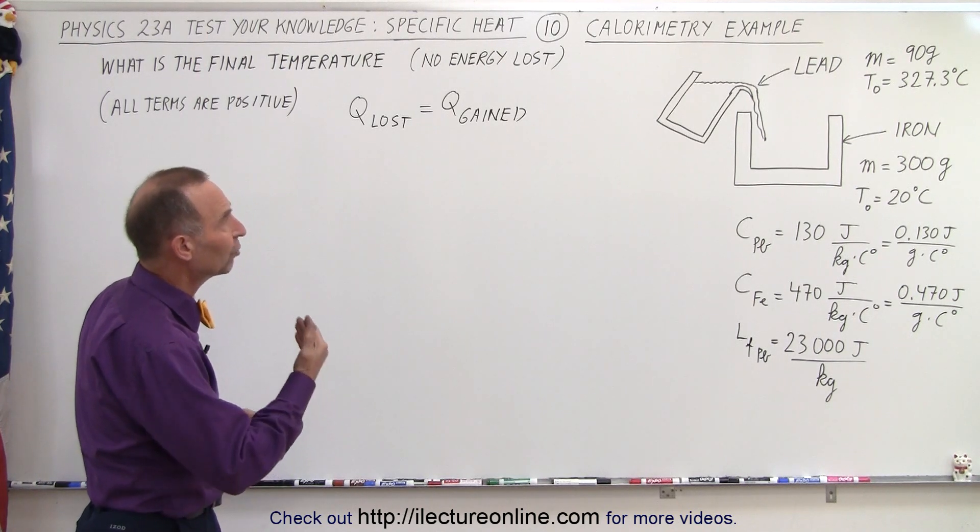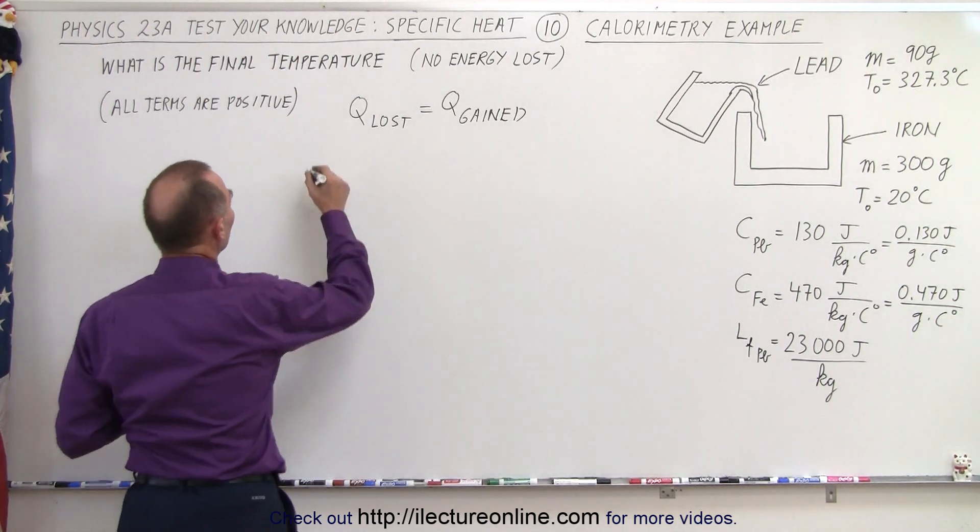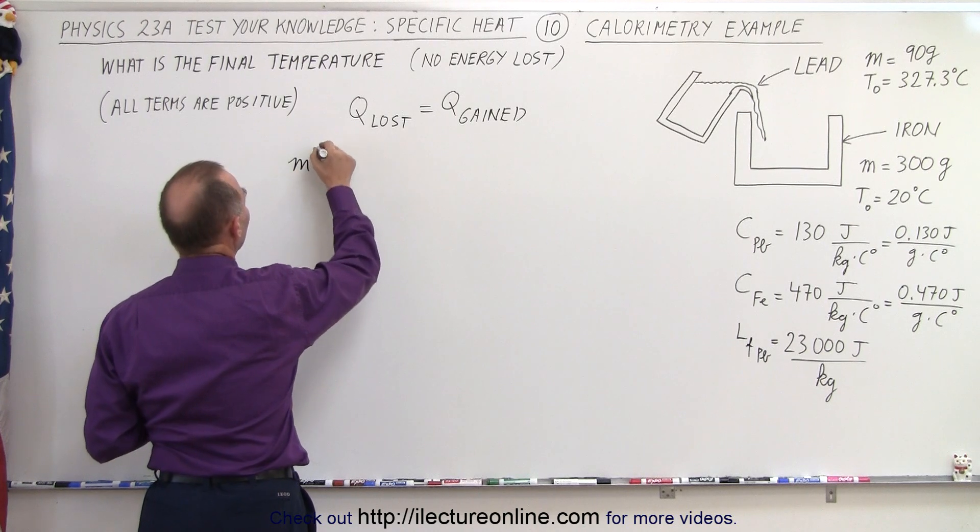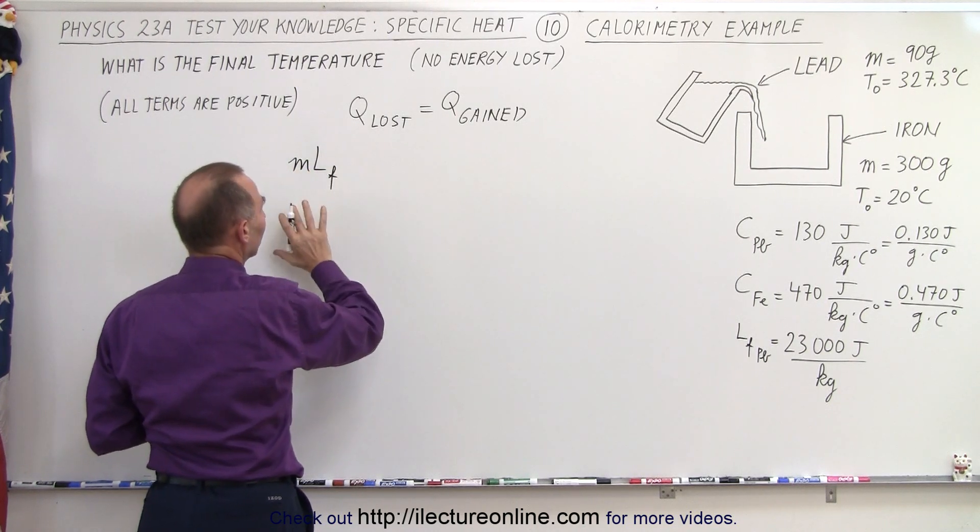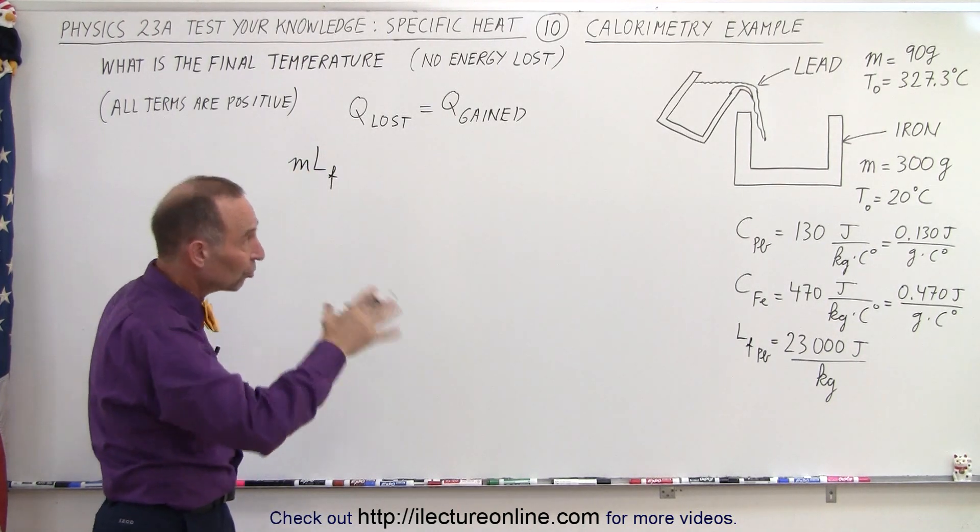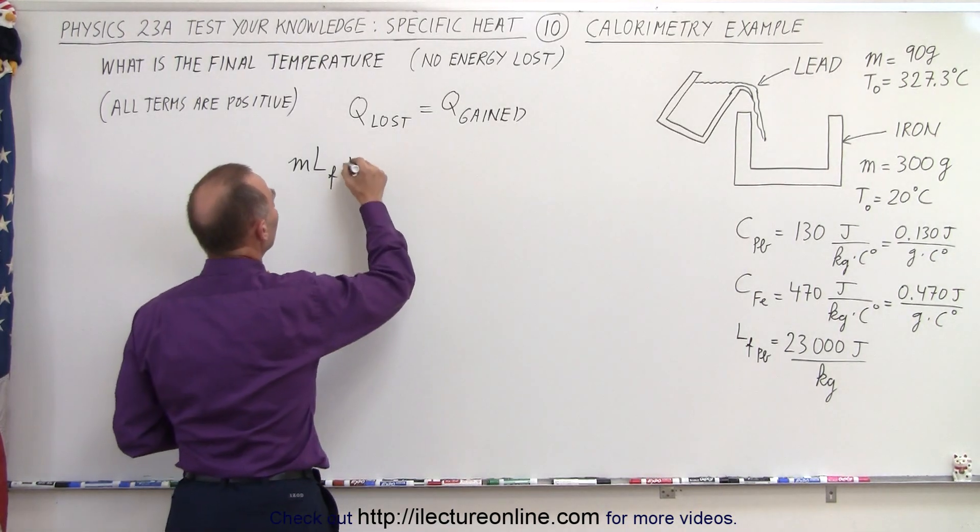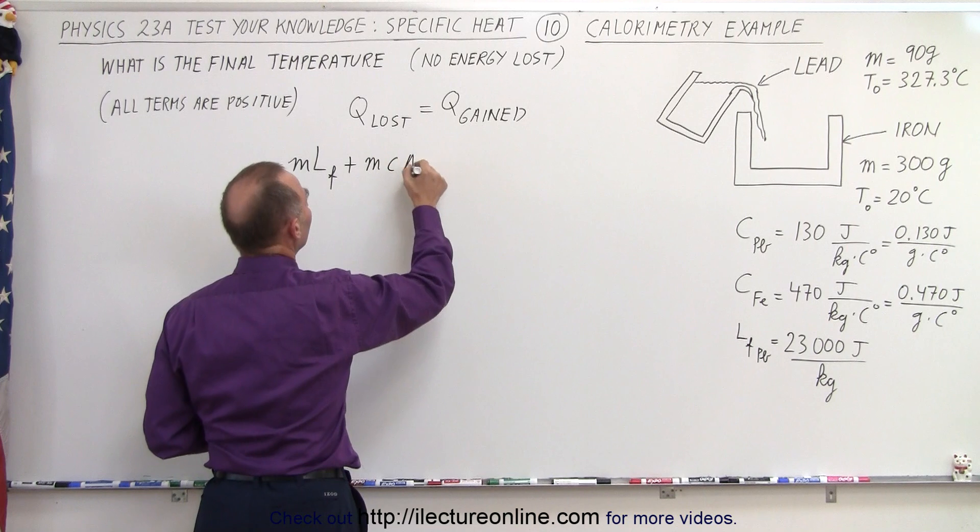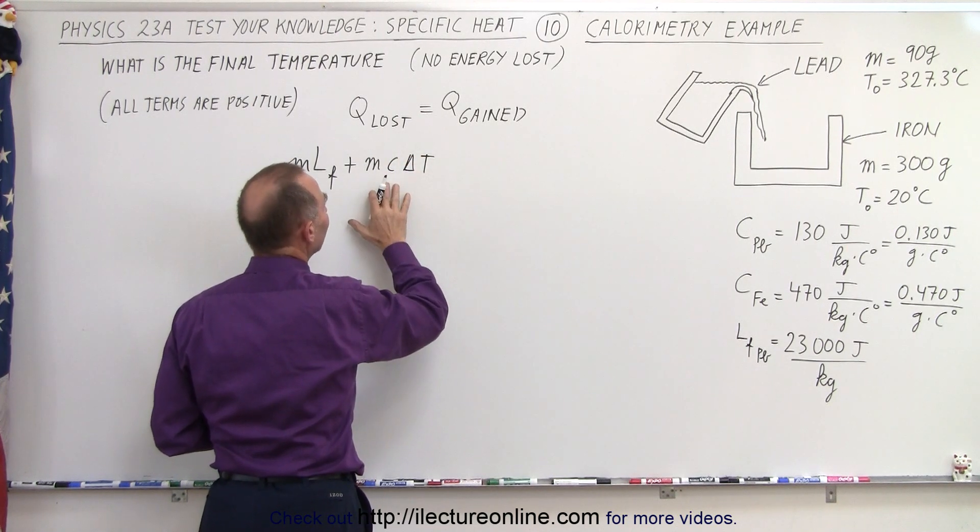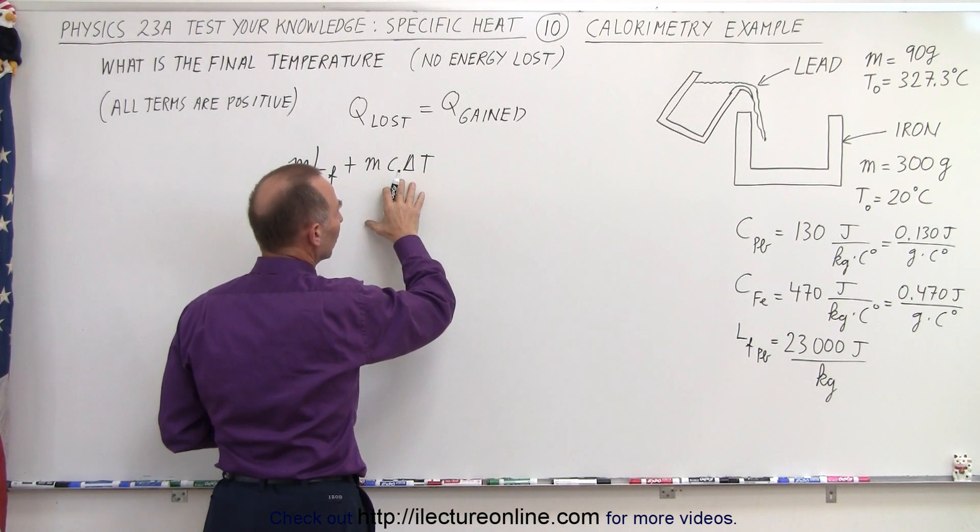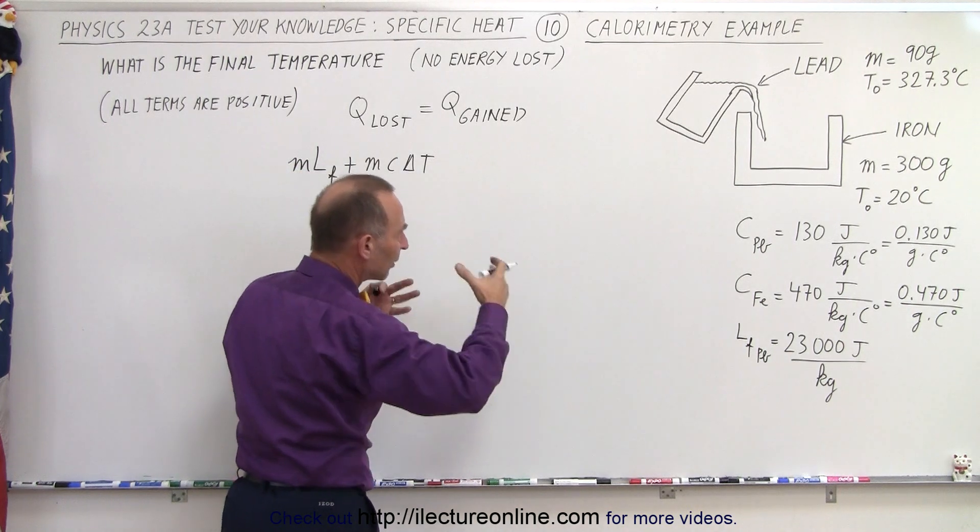So what's losing heat? Well, it's the hot lead. So in this case, we're going to have the mass of the lead times the latent heat of fusion of lead, as lead goes from a liquid to a solid, depositing heat into the iron, plus the MC delta T, which is the hot lead losing temperature and cooling down as the iron heats up.